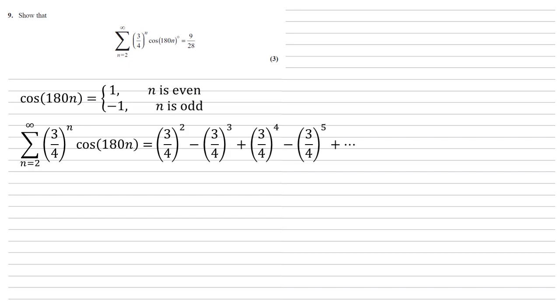So this gives us our sequence here. We'll start off with three quarters squared when n is 2, cos becomes 1 so it's positive. When n is 3, the cos is negative, so we get minus 3 quarters cubed and plus 3 quarters to the power of 4 minus 3 quarters to the power of 5 and so on. So the power is going up by one each time and we're flicking from positive to negative and back again.